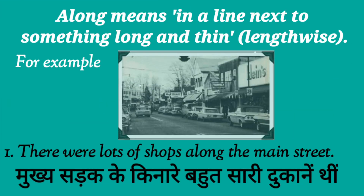Now let's dive into Along and समझते हैं अच्छे से Along क्या है। Along means in a line next to something long and thin — यानि कि lengthwise। जैसे कि road — road कैसी होती है? Line में, लंबी और thin होती है। River भी लंबी और thin होती है। और उसी के साथ अगर कोई object है, तो हम Along का प्रयोग करते हैं। It's very simple.